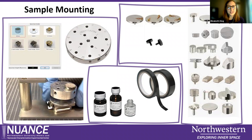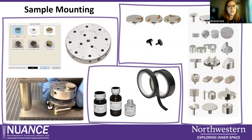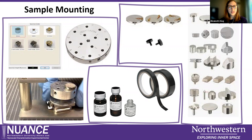Once you have your sample on a stub and ready to go, you need to insert it into the chamber. Depending on the microscope — the Hitachis, the JEOL, or the Quanta — there are different types of sample holders. The typical one holds pin stubs and comes in different sizes, holding anywhere from one pin stub to 26 pin stubs. There is also a screenshot from one of our Nuance YouTube videos showing how to put together some of the sample holders. The YouTube page is a great resource for all those different niche ways of putting these sample holders together.